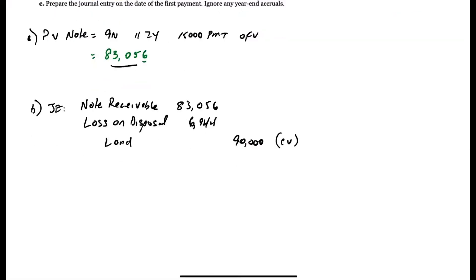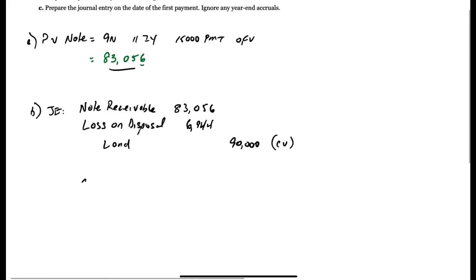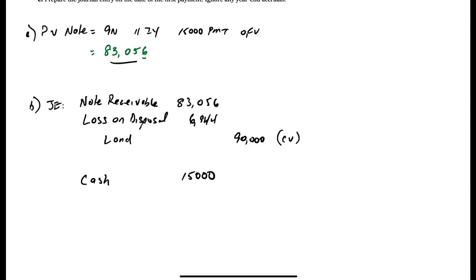And the first payment, a year from now, there's going to be a payment that you will receive because you are selling the land and you're issuing a note, which means the buyer is paying you $15,000 a year. So you're going to debit cash for $15,000, and you're going to have interest revenue now, because this is an interest-bearing note.